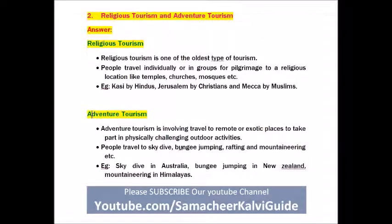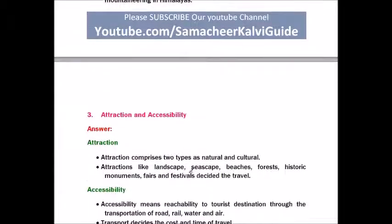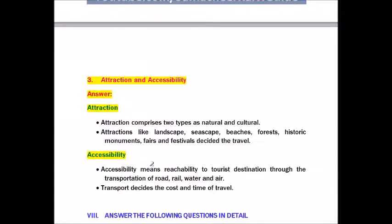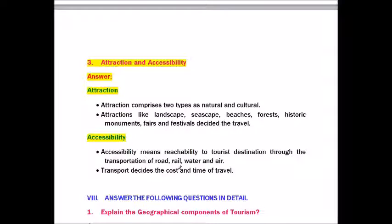Adventure tourism examples: Skydiving in Australia, bungee jumping in New Zealand, mountaineering in the Himalayas. Question three: Attraction vs Accessibility. Attraction comprises natural and cultural attractions — landscapes, seascapes, beaches, forests, historic monuments, fairs and festivals. Accessibility means reachability to tourist destinations through road, rail, water, and air transport, which decides the cost and time of travel.